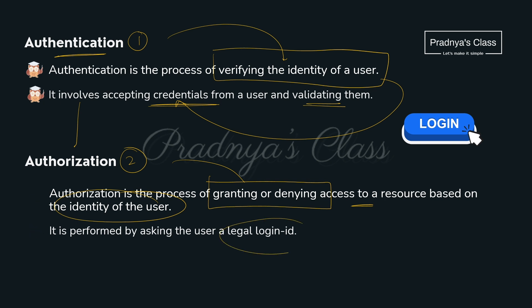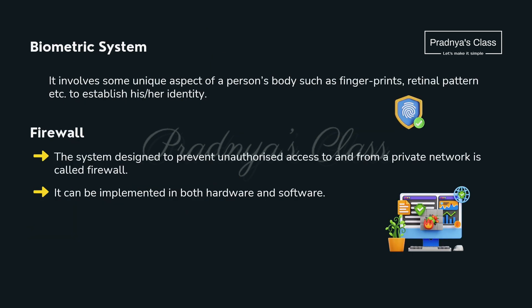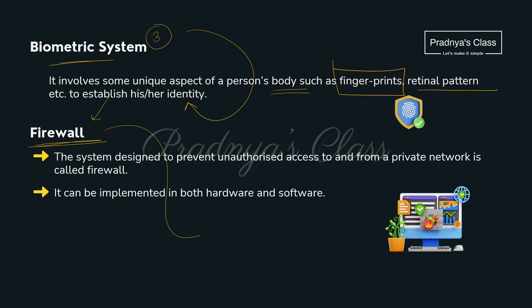Generally authorization is done with a login ID. There are more protection mechanisms. Biometric System identifies a person using the body's unique aspects like fingerprint or retinal pattern. We can also install a Firewall, which comes in both hardware and software form and is used to prevent unauthorized access. In this way we studied four types of protection mechanisms.